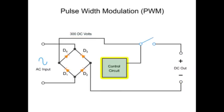A control circuit operating a DC switch turns the DC output on and off. This controller device can be an SCR or a powerful transistor.